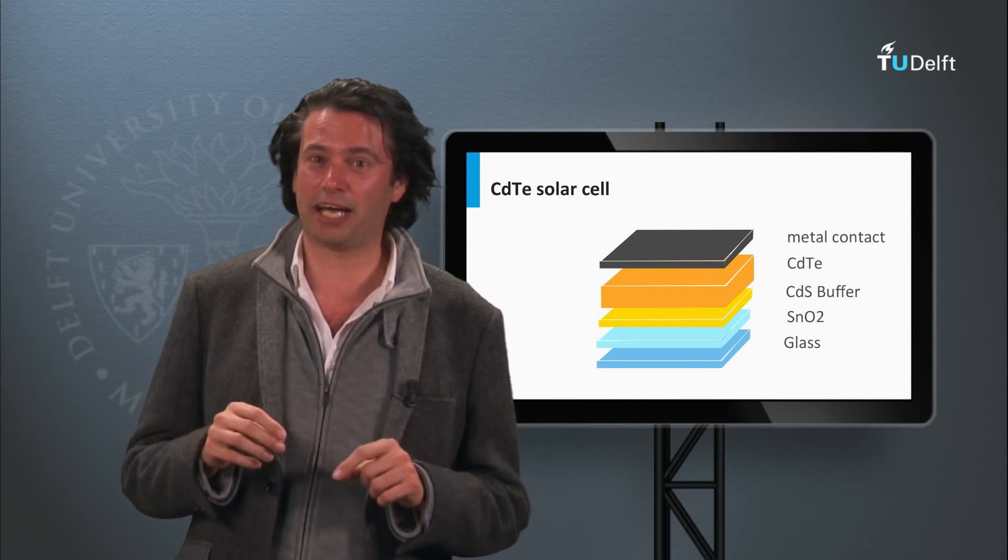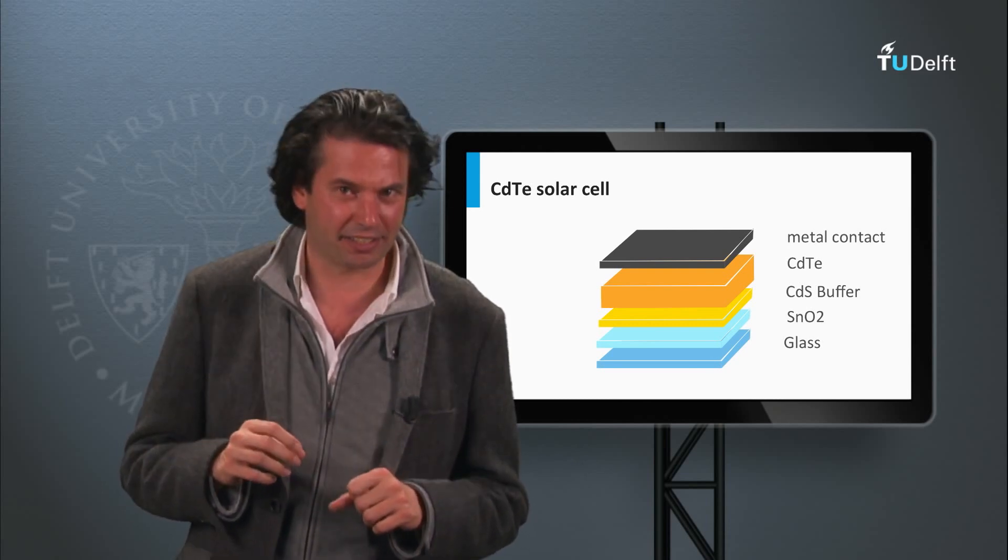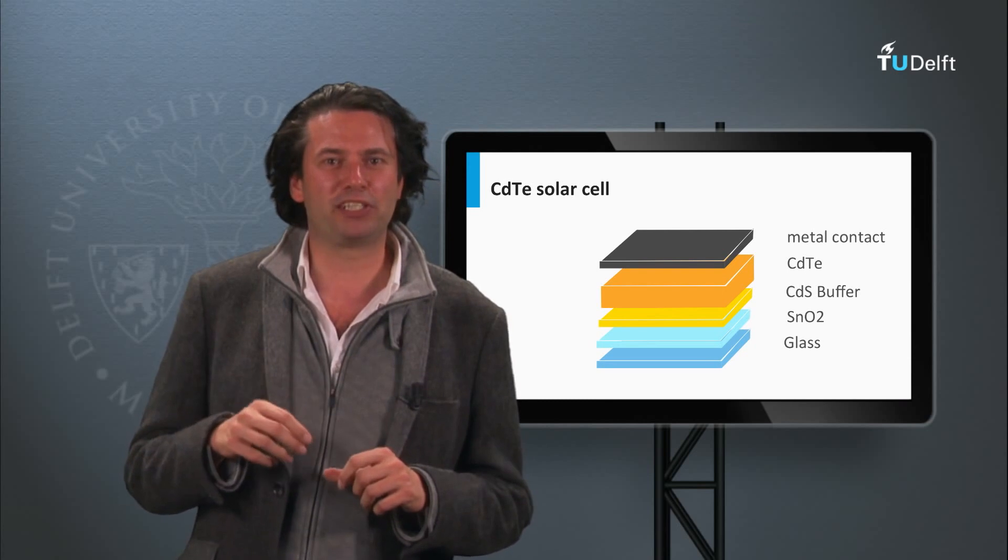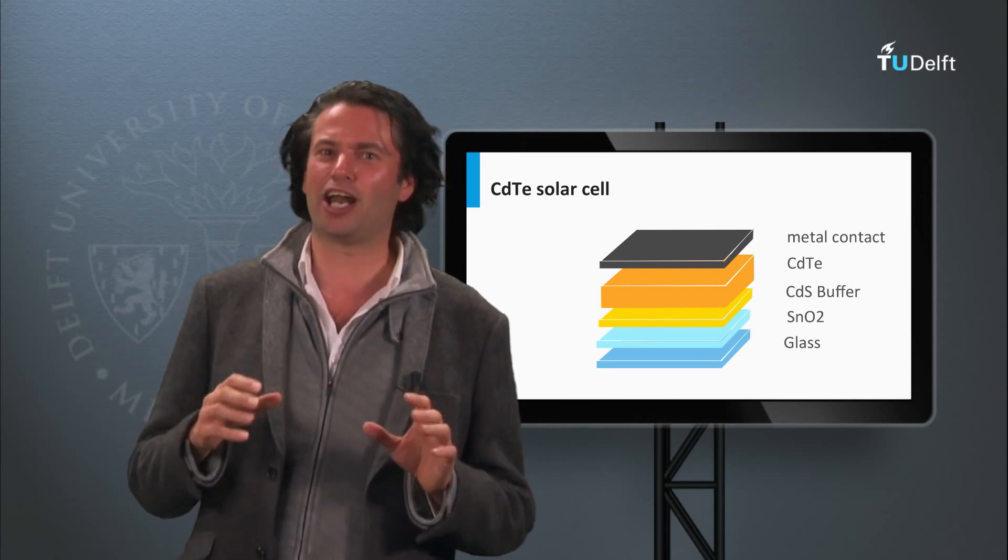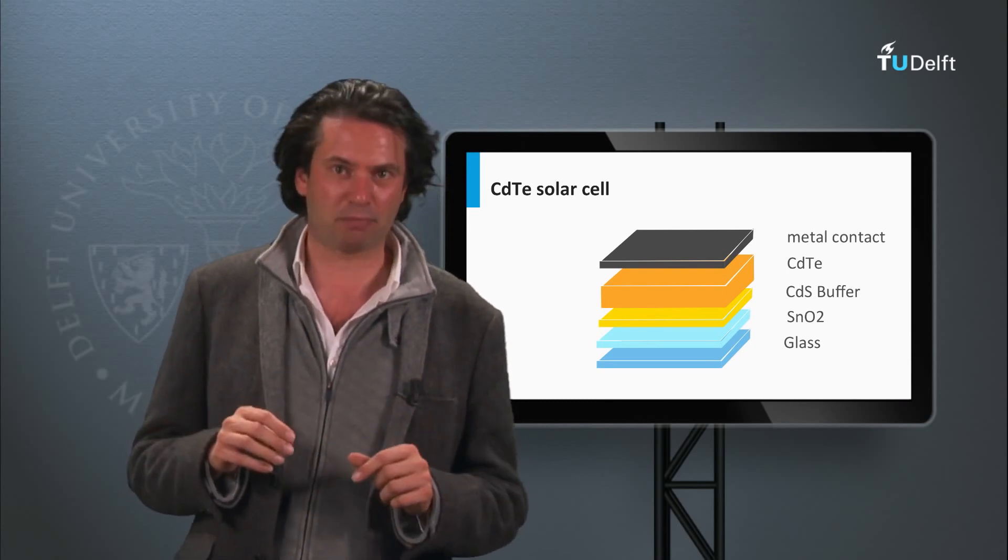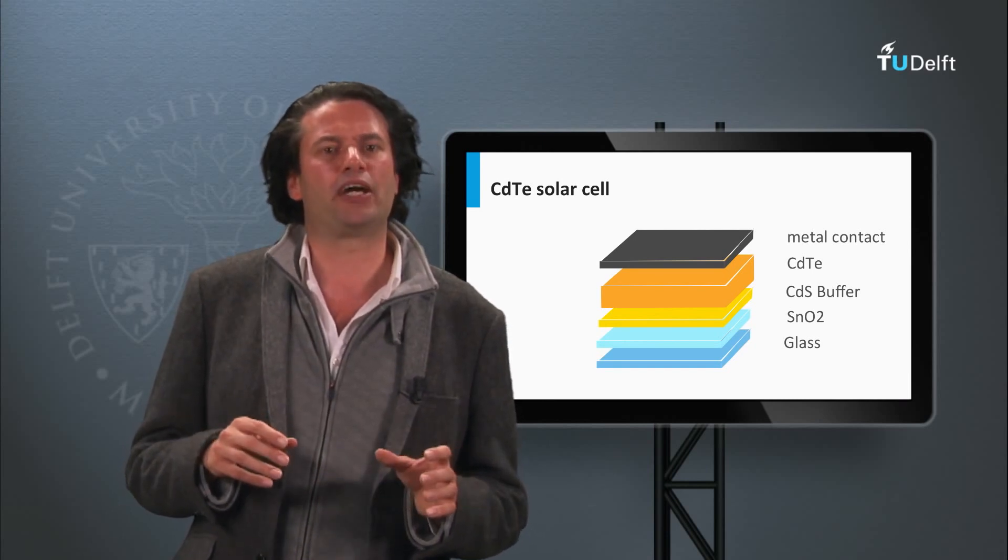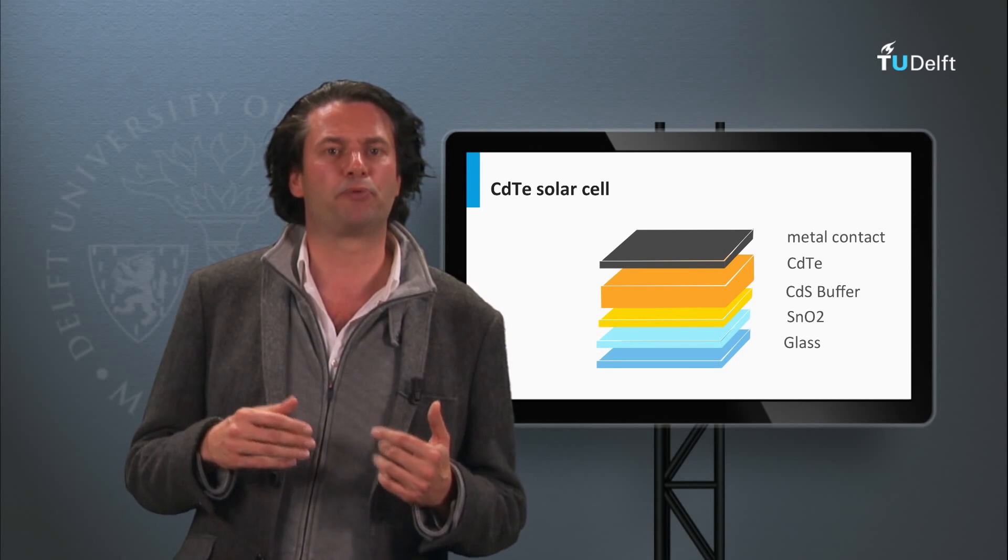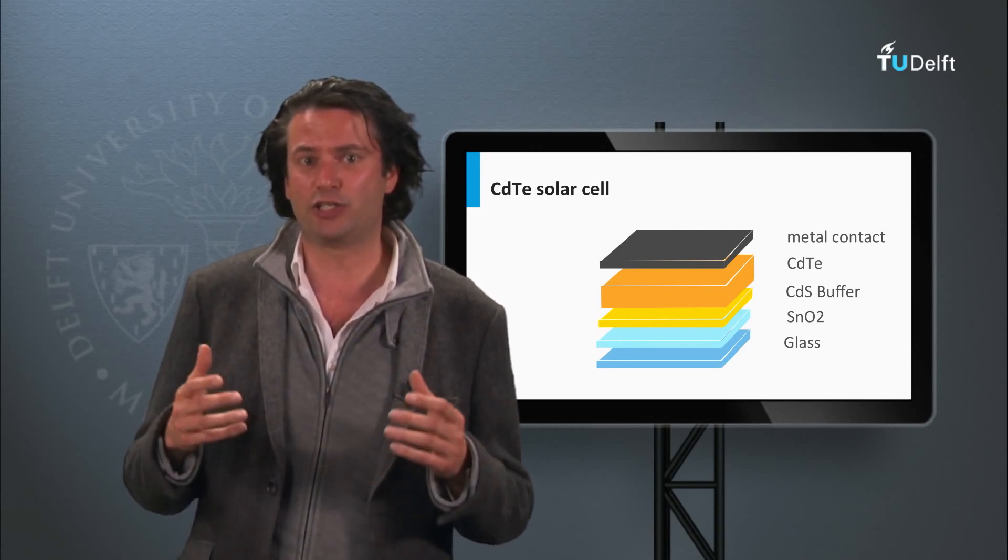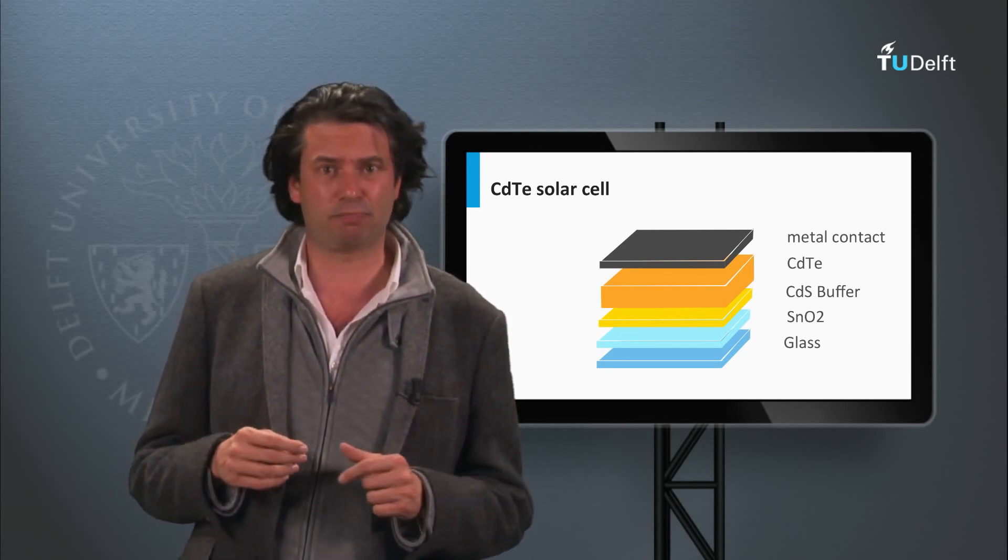Making a good back contact on cadmium telluride is rather challenging. The material properties of cadmium telluride do not allow a large choice of acceptable metals. Heavily doping the contact area with a semiconductor material improves the contact, however achieving high doping levels in cadmium telluride is problematic.